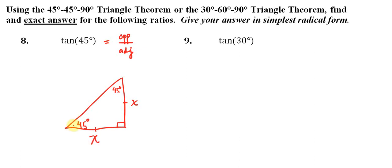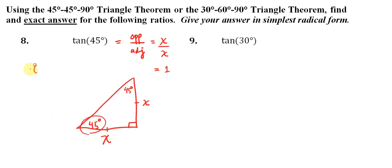If we use this as our reference angle, the leg that's opposite of that 45 degree is X and the leg that's adjacent to this 45 degree angle is also X. And therefore you can see that this will simplify down to just 1, so we can say that the tangent of 45 degrees will always be equal to 1.